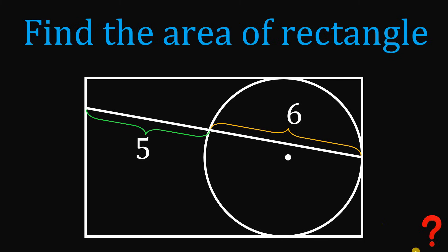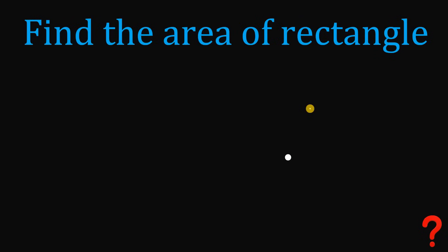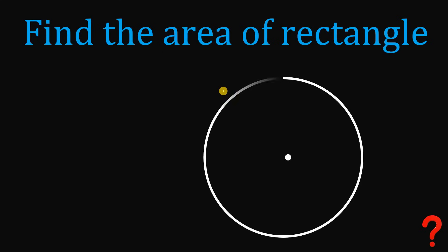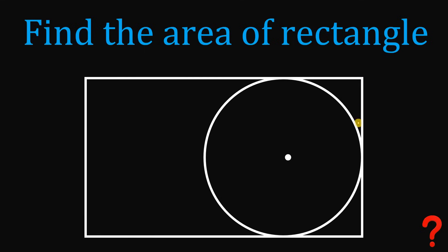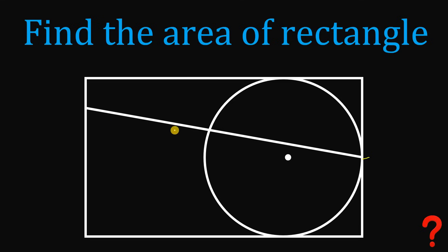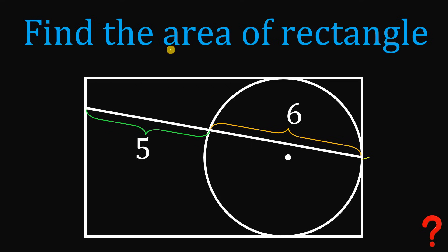Can you solve this geometry challenge? Given a point, draw a circle, then draw a rectangle such that three sides are each tangent to the circle. From the point of tangency, draw a segment directly to the opposite side of the rectangle. The measure of this segment must equal 5 units, and the measure of this other segment must equal 6 units. Our goal is to find the area of this rectangle.